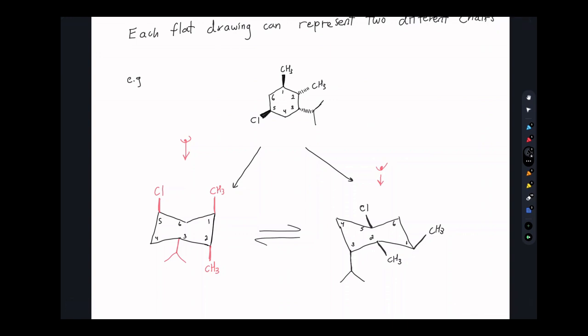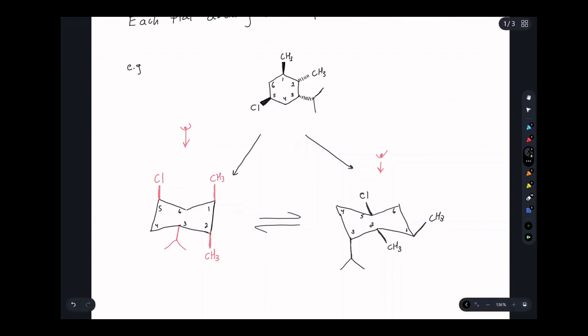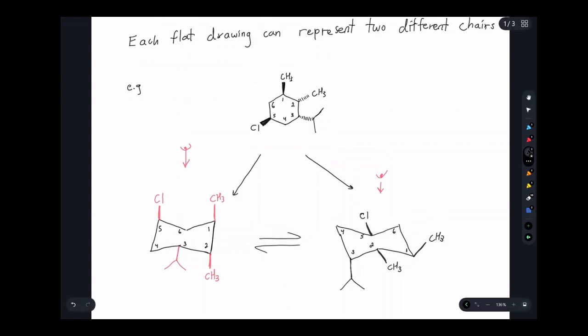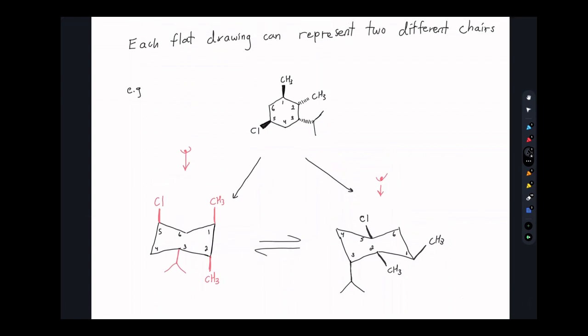Now, again, they are very similar. They have the same molecular formula, but they're different in the way that these atoms project, either axial or equatorial. And that can affect the stability of these rings. So let's break down how these chairs are able to interconvert.